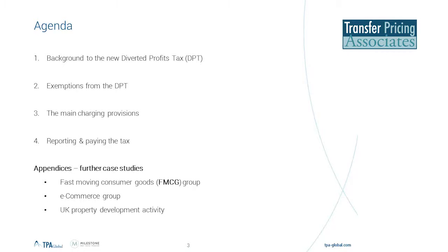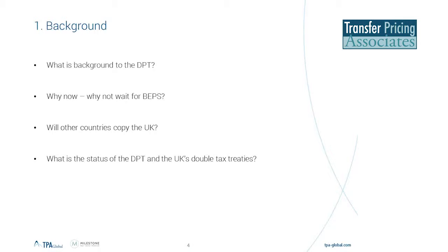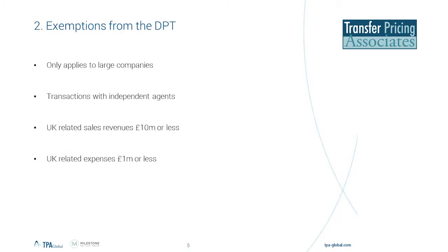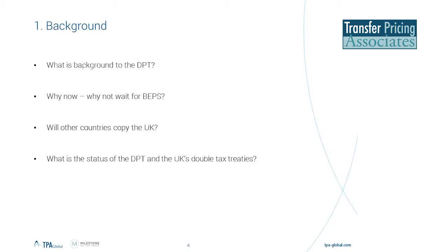I would like to invite Zoe to take us through the background. The DPT is the UK Government's response to the public view that big business doesn't pay its so-called fair share of tax, and also to the general consensus that existing rules such as transfer pricing and the permanent establishment definition do not go far enough in protecting the UK tax base. The DPT has been introduced to effectively override the application of the transfer pricing regime to related party payments and the existing UK PE definition. We only received draft legislation back in December and following a very brief consultation, we have the final legislation on the 25th of March this year, which became effective just one week later on the 1st of April.